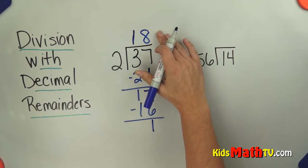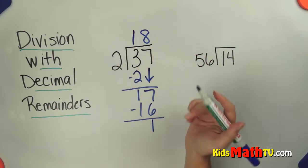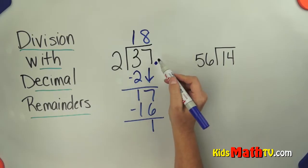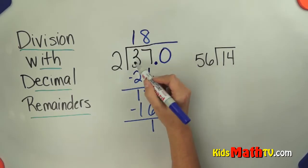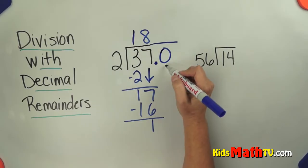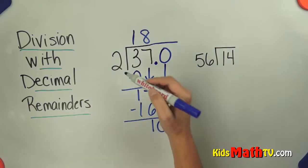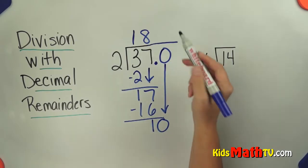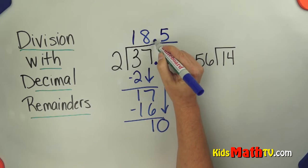So instead of putting a remainder up here or making this into a fraction remainder, what I'm going to do is put a decimal point. This is like $37. I can add a zero at the end without changing the value of this 37. Now I have a zero to bring down, and I can see how many 2's are in 10, and there are 5. I can't forget to bring my decimal straight up.